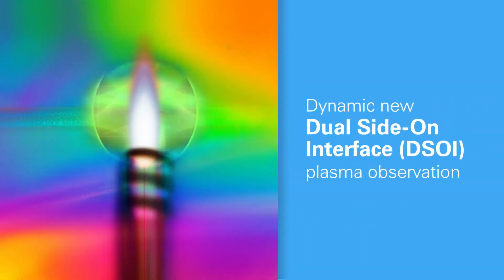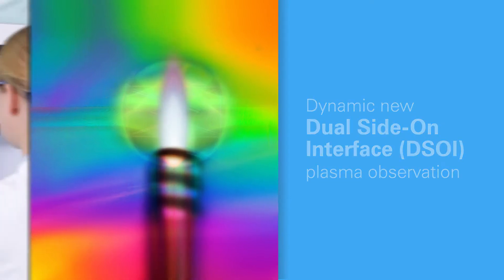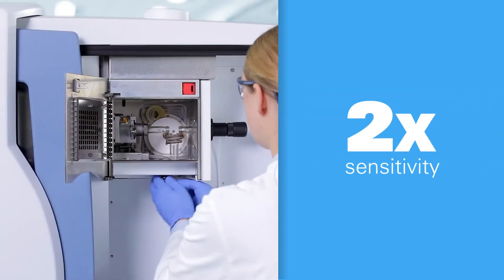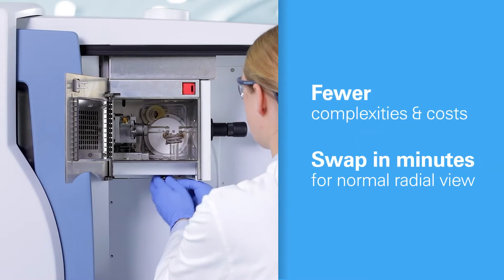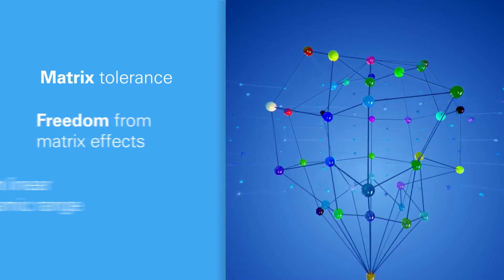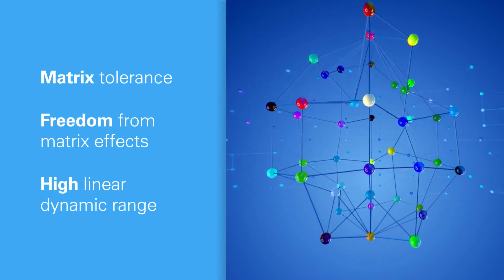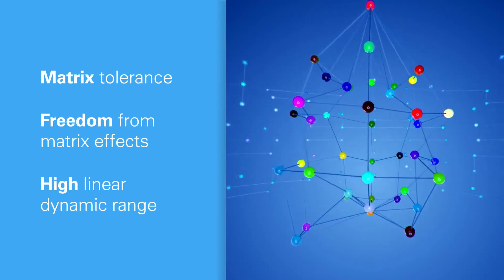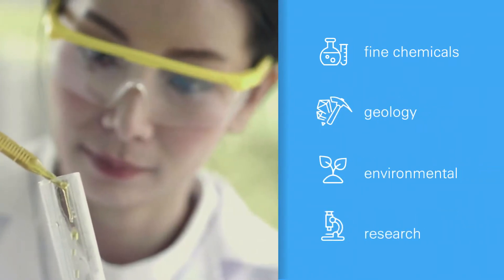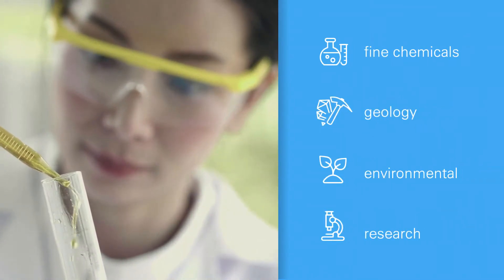The dynamic new DSOI plasma view option gives you twice the sensitivity of conventional radial views, and you skip the complexities and costs of vertical dual-view models. With a single simultaneous measurement, DSOI tackles the toughest matrices. So DSOI makes a real difference in many demanding applications.